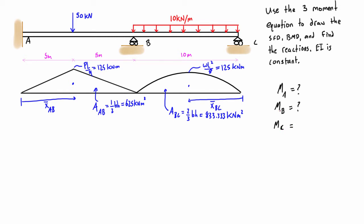So MA is going to be an unknown right now. MB is going to be an unknown. But if we look at this and think about MC, we can determine that the internal moment here is zero because it's basically on the end of a span with a roller support there, so that is going to be zero.